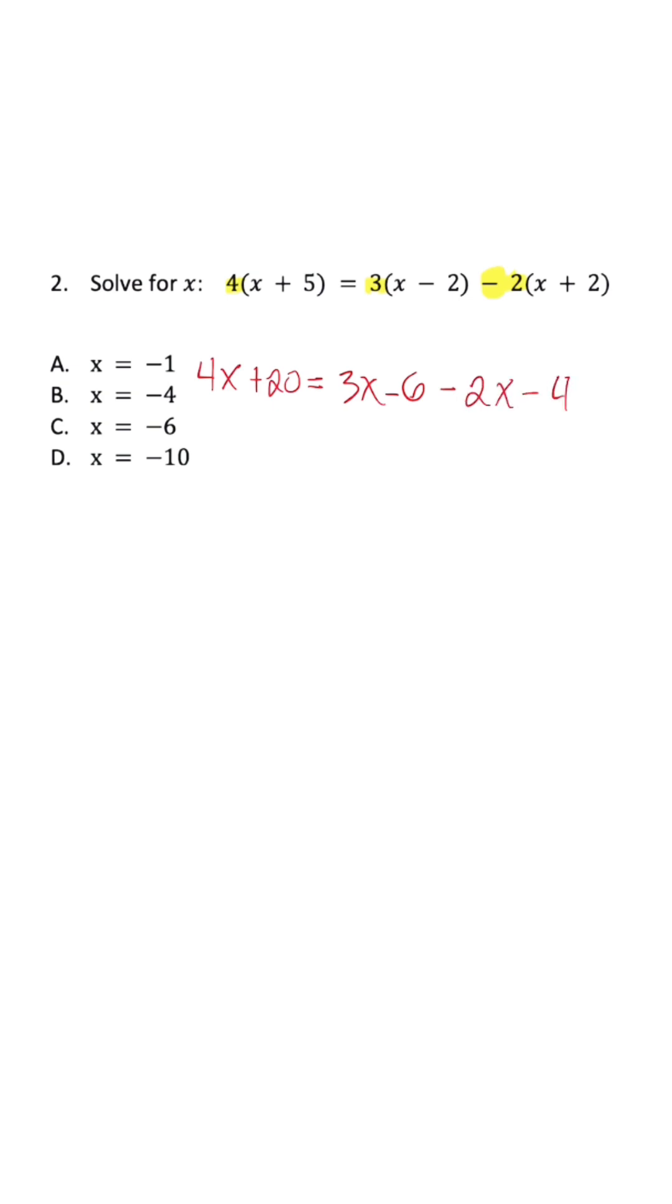Now, the next thing we need to do is combine our like terms. We have 3x and 2x, which is just going to give us x, and then we have negative 6 and negative 4, which is going to give us negative 10.